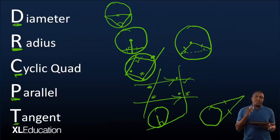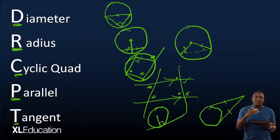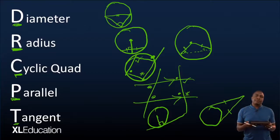Put as much information as possible onto your diagram. I advise you to use different colors — for the diameter, for the radius, for the cyclic quad, for the parallel lines — so that your diagram shows some clarity and things start to become more visible. Be careful not to use too many colors, because you might end up getting confused as well.